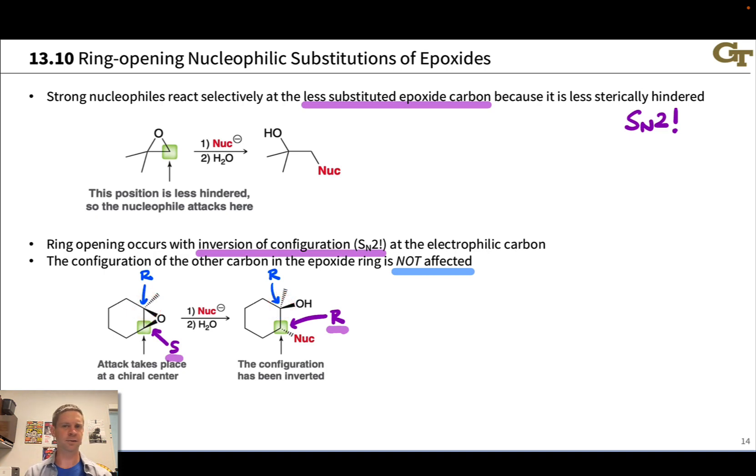But notice that the other stereocenter's configuration is completely unaffected. It's really just a bystander in this reaction. It's not participating at all. This oxygen just kind of flops over here in the final product, and this carbon's just sort of along for the ride. So it starts R and it ends R, and there's no change in configuration at that carbon.